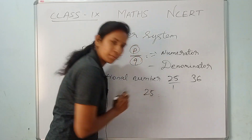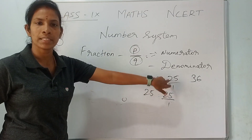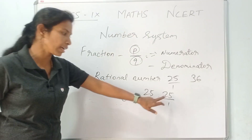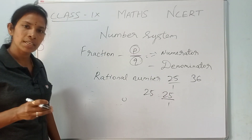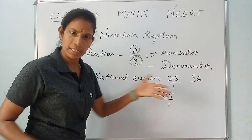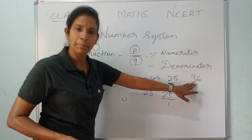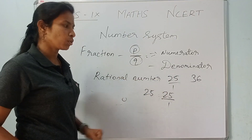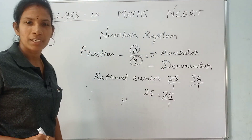We can write 25 as 25 by 1, where the denominator is 1, which is not equal to 0. So 25 satisfies the rational number condition P/Q where Q ≠ 0. Similarly, 36 is a natural number, a whole number, and a positive integer — and also a rational number, written as 36 by 1.